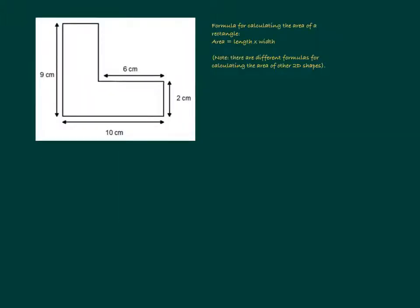In this example, we have what we would describe as a compound shape, as we have these two conjoined rectangles. And we'll need to work out the area of two separate sections and combine them together.